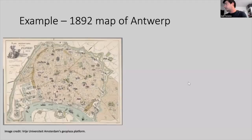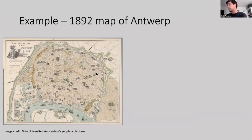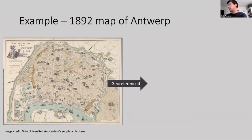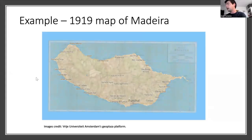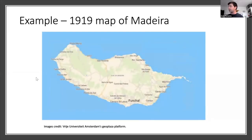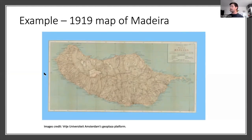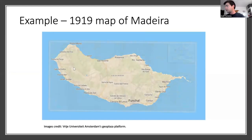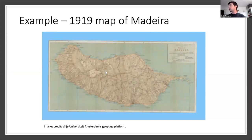Here are some interesting maps that have been georeferenced to illustrate the concept. This is an 1892 map from Antwerp, Belgium — a quite detailed map with pictorial images of buildings. After georeferencing, the map lines up against where it actually is on Google Maps, so we can now see exactly where these buildings are. This can also be done at a larger scale — this 1919 map of Madeira has been georeferenced to Google Maps, and you can see topographical features and find where they are on Earth.